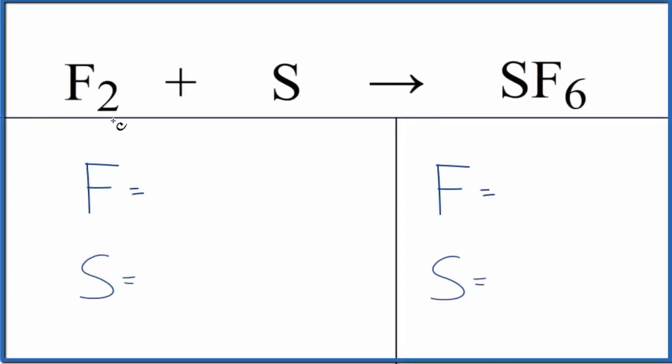I was asked to balance this equation and talk about the type of reaction. Usually with this equation I see F2 plus S8 gives SF6. But here we have F2 plus just S, the sulfur, which gives us sulfur hexafluoride.